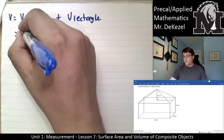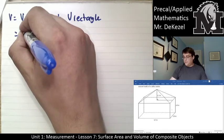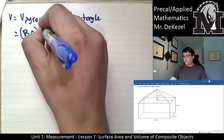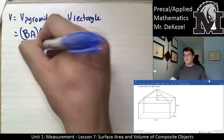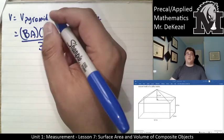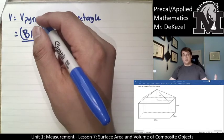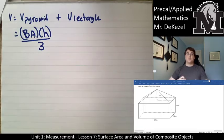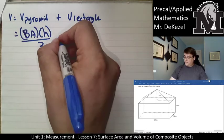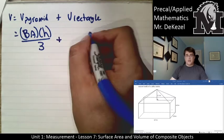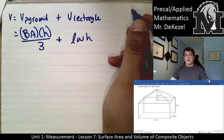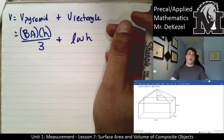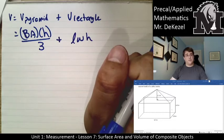We know that the volume of a pyramid is equal to the base area multiplied by the height divided by three. That's the height of the pyramid. We're actually given the base area, which we know from the dimensions of the box, and then all divided by three. And then for the volume of a rectangle, that's just the length, the width, and the height of that box.